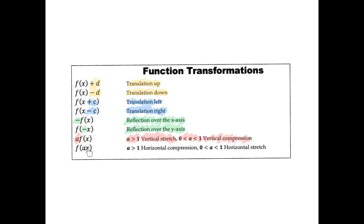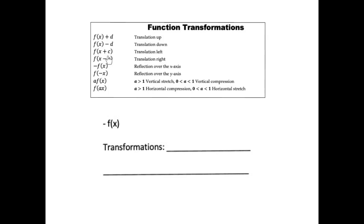If we're multiplying inside of the parentheses, we'll get horizontal changes, but I need to pay attention to the actual number. If the number multiplying only x is bigger than one, I will get a horizontal compression — it's like pushing towards the center from the left and right, making everything squish in. But if the number is between zero and one, I will get a horizontal stretch — like pulling left and right to make everything stretch out.